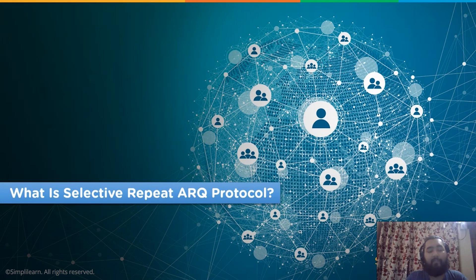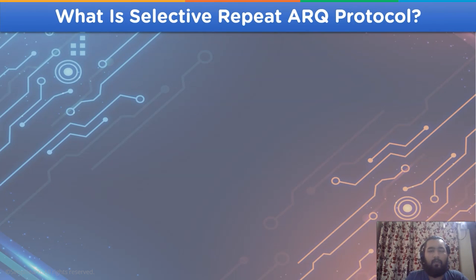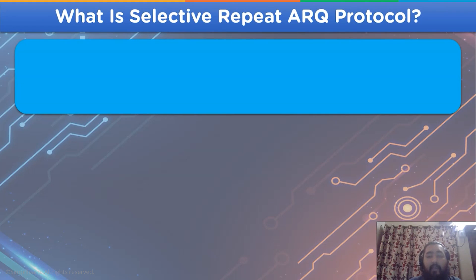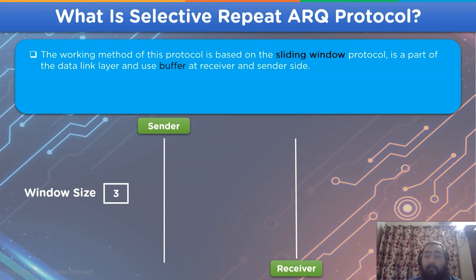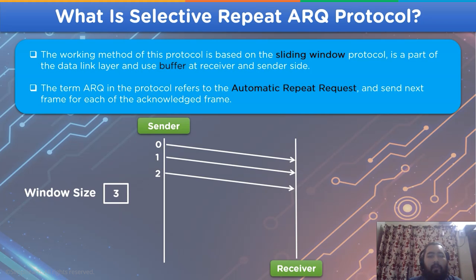The working principle of the Selective Repeat ARQ protocol is based on sliding window protocol, and it uses a buffer system for storing data either at the sender side or the receiver side during data transmission. The term ARQ in the protocol defines the automatic repeat request process, which is designed to perform the task of sending the next frame for each acknowledged frame.